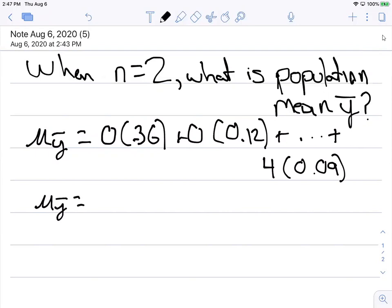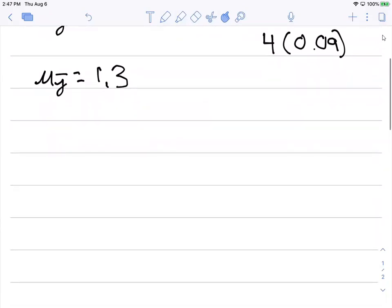And so when we do that, mu sub y is going to equal 1.3. That should seem very similar to the last exercise we did. The mean is the same. So now we're going to look at the variance of y-bar.